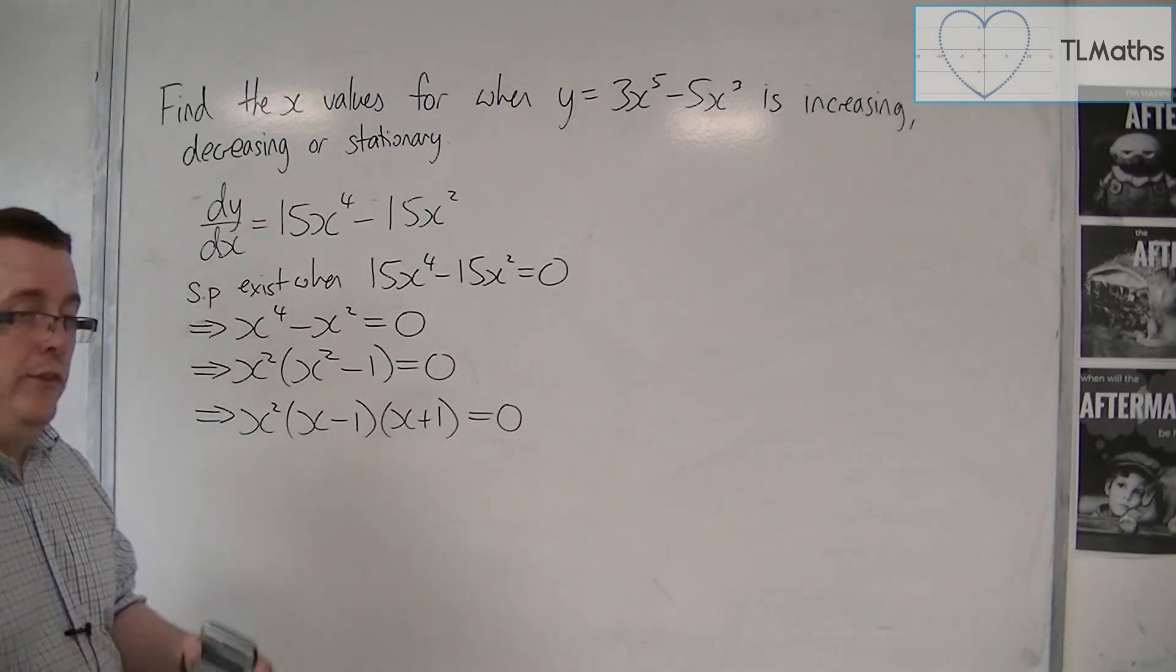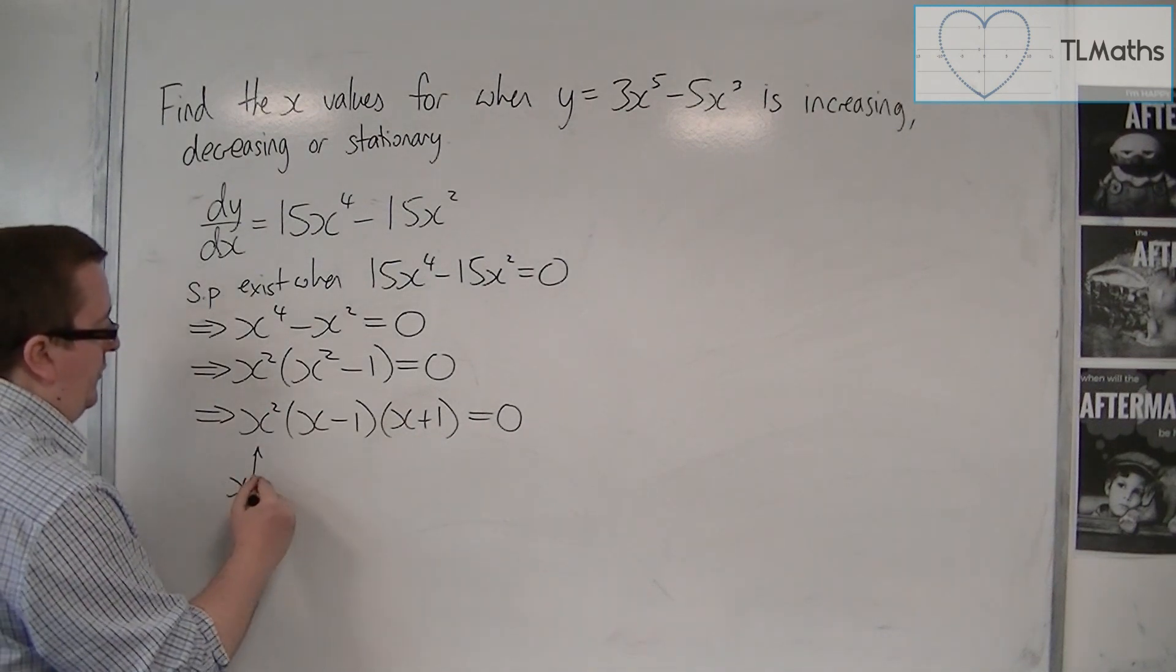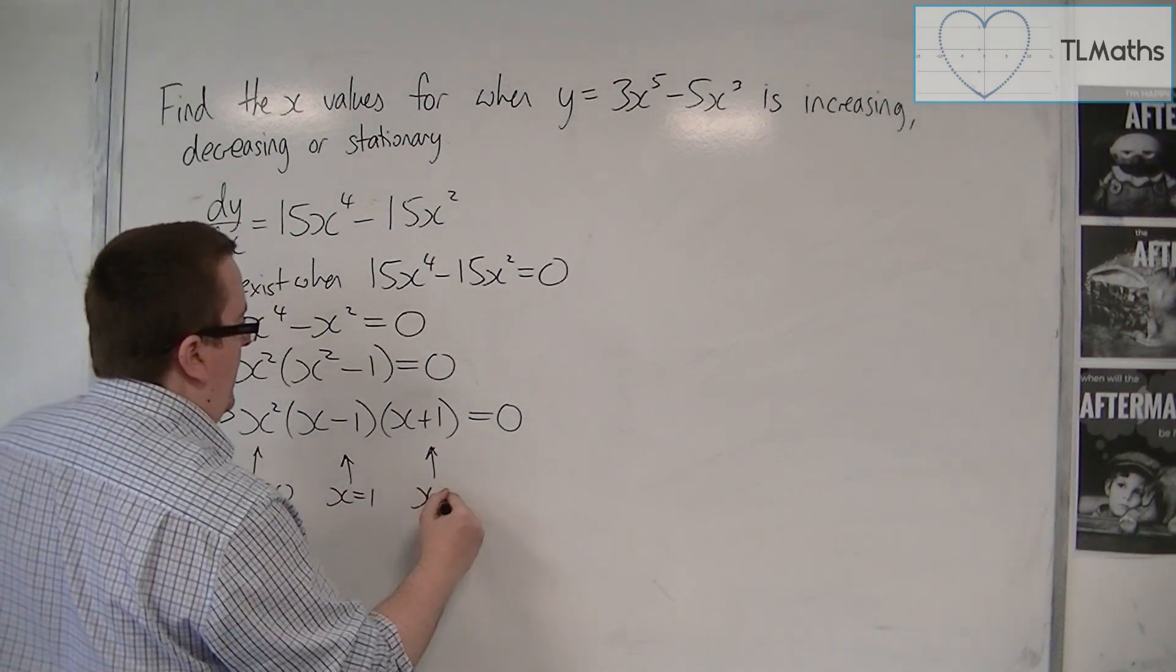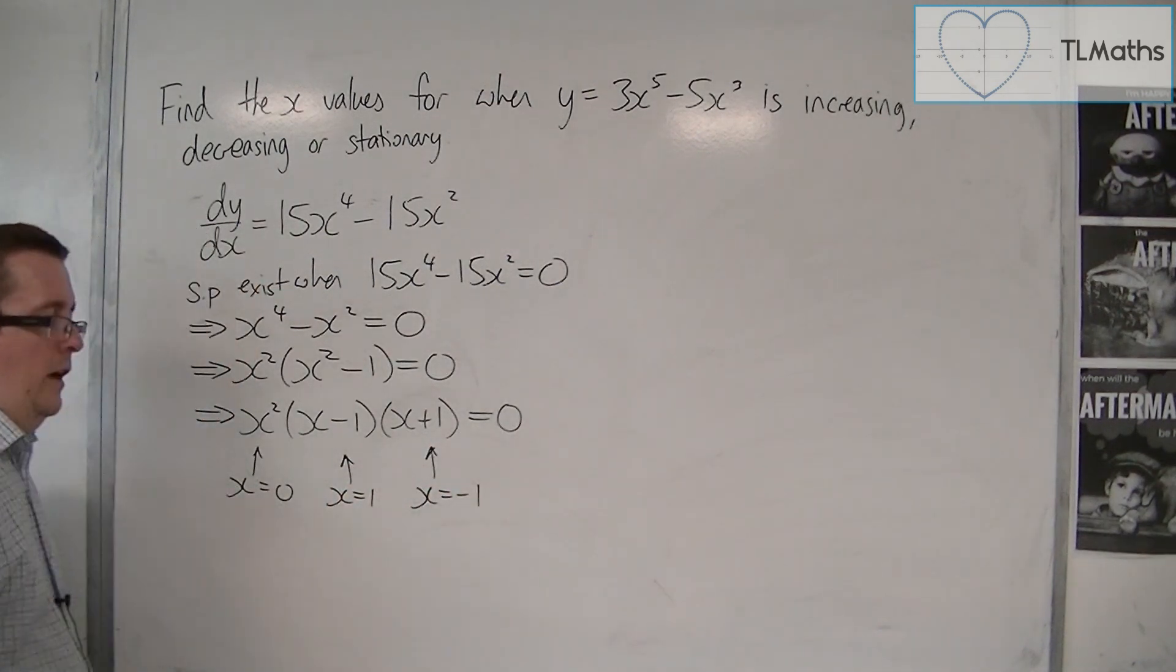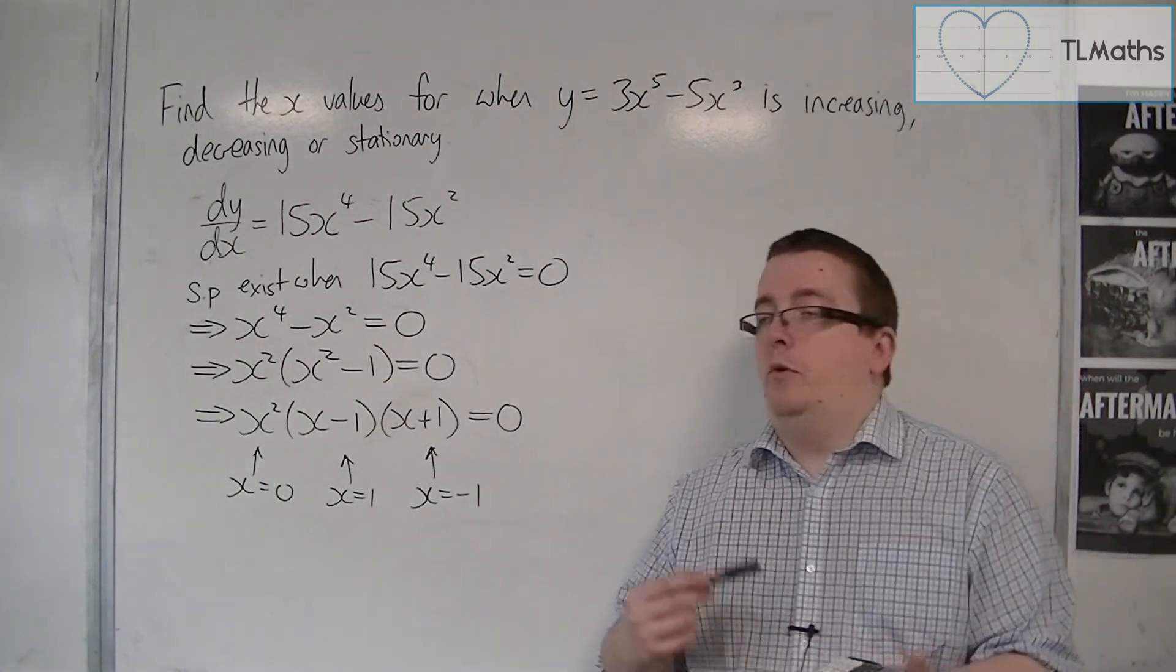And that gives us three stationary points. One at x is 0, one at x is 1, and the other is at x is minus 1. So we have three stationary points to work with.